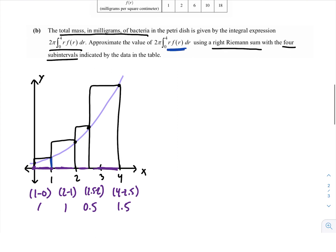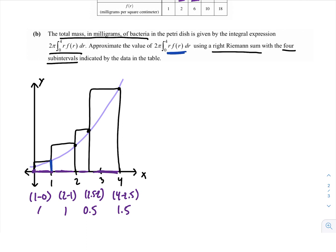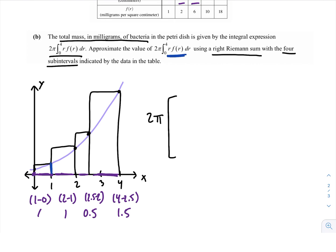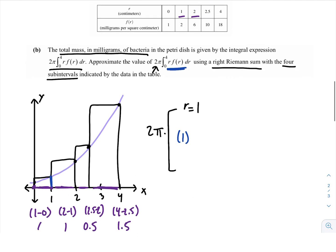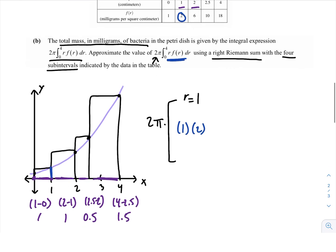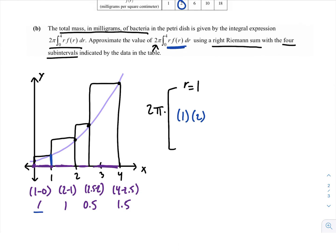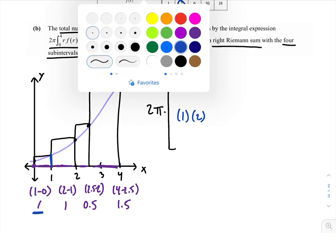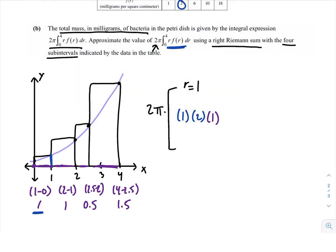So, the height of this first one is determined by r times f(r). Actually, first of all, let's put our 2π out on the front of this sum. It's important to include this. It's being multiplied by the evaluation of this integral, but make sure you remember that 2π. So, when r equals 1, our height is going to be determined by 1, 1 is r, and then f(1), which would be 2. And then we have to multiply it by the width, which is 1, and that is the first rectangle, but we have 3 more of these. So, let's keep moving along.